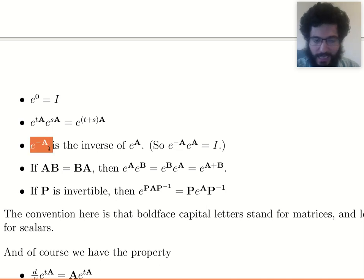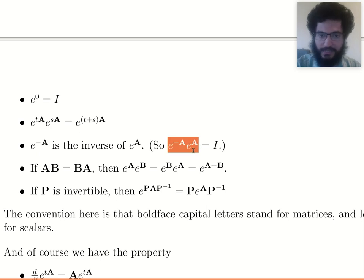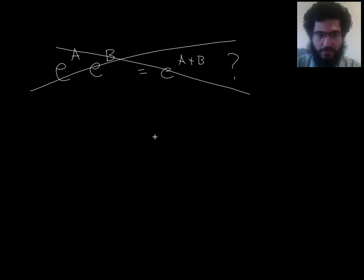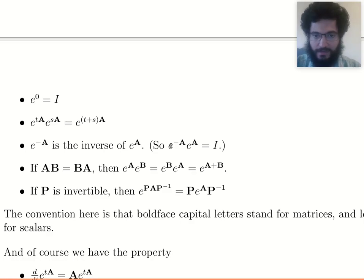e to the minus A. So if you put in the negative of a matrix here, then you do actually get the inverse matrix. So what we're saying is even though you don't in general get this, you still do get this.